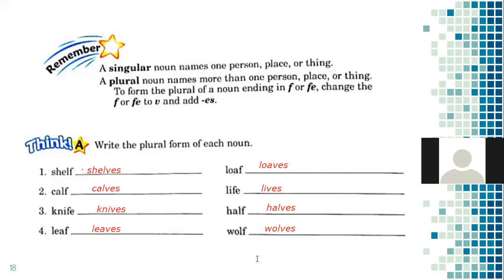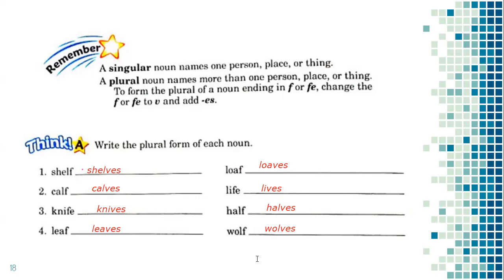Let's repeat: shelf → shelves, calf → calves, knife → knives, leaf → leaves, loaf → loaves, life → lives, half → halves, wolf → wolves. We found the plural forms of these singular nouns, applying the rule that if a noun ends in F or FE, you change the F or FE to V, and then you add the suffix ES.